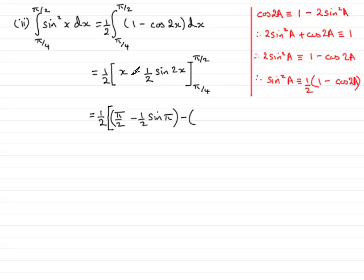And then we have minus, and I'm going to substitute now x for pi upon 4, so we have pi upon 4, and then minus a half times the sin of 2 lots of pi upon 4, so that's going to be pi upon 2.